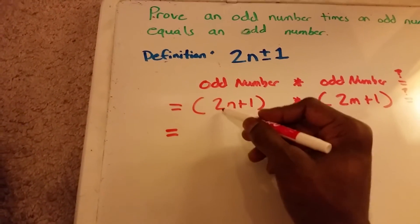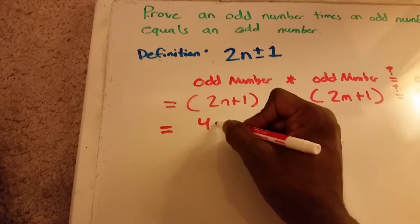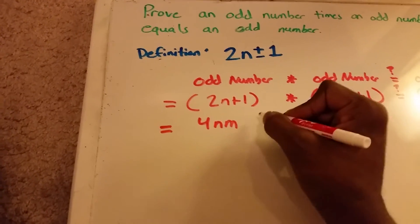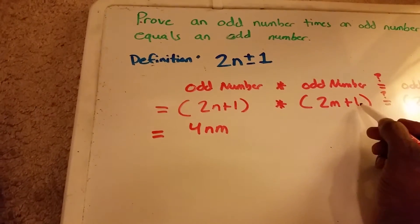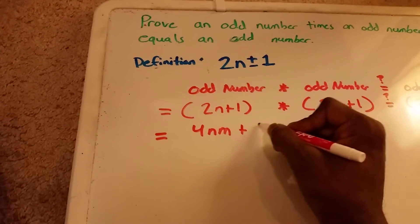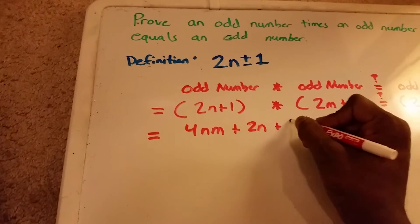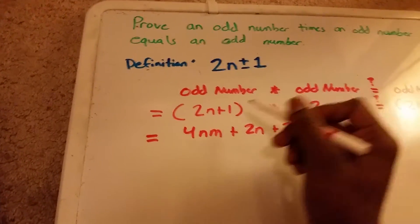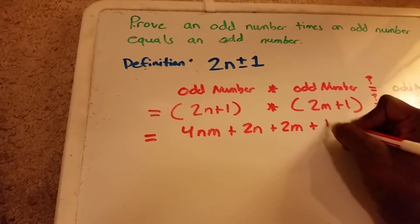Let's do our foiling. So we have 2n times 2m, that gives us 4nm. And then we have 2n times 1, that gives us plus 2n. We have 1 times 2m, that gives us plus 2m. And then we have our 1 times 1, and that gives us 1.